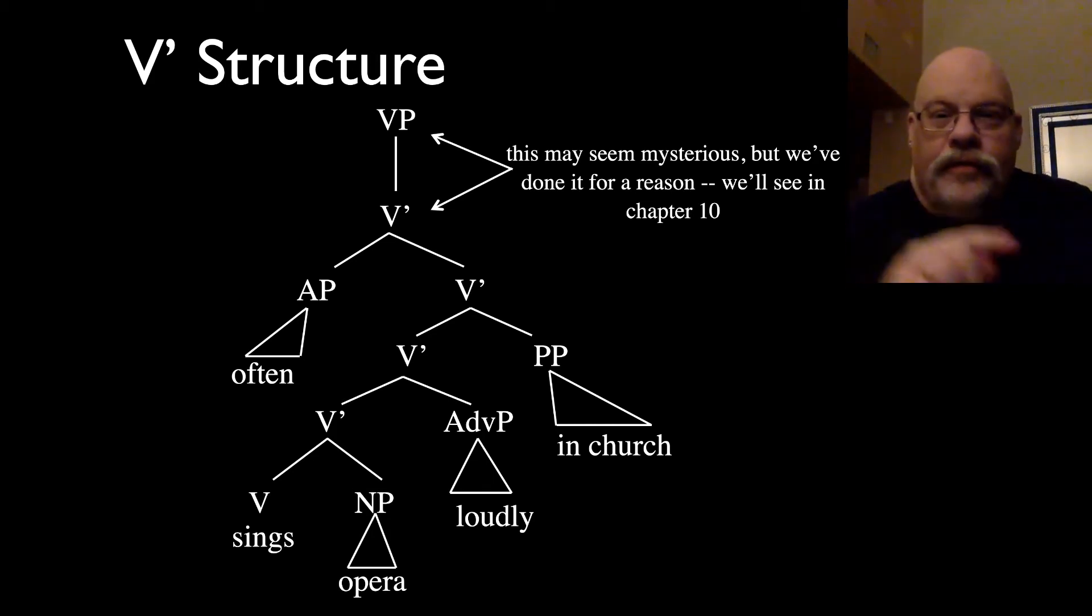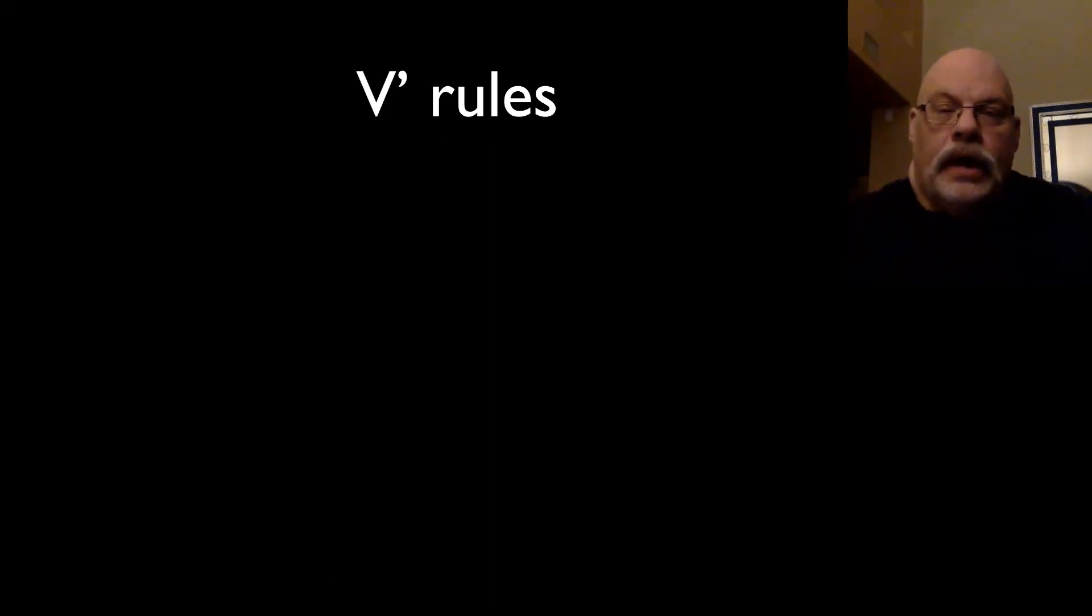I've not proven this to you yet, but I will when we come back to it in chapter 10. So with this structure, we have the constituency we need to account for those does-so and does-so-too replacements. In each case, the does-so or does-so-too replaces the V bar category.